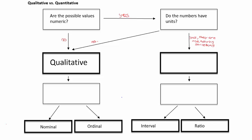If the numbers are not numeric or the numbers stand for something else, those are two ways to get to qualitative data. Qualitative data — the beginning of the word describes a quality. In general, qualitative data is not numeric data but words, though it could possibly include numbers that stand for something else. At this point, we've decided our data is qualitative.